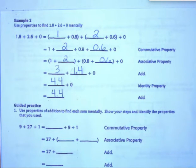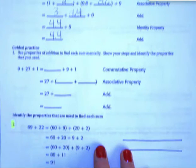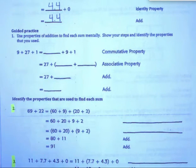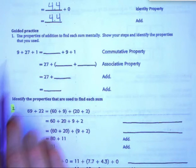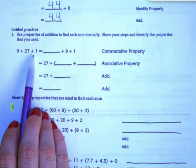Alright, let's do a guided practice problem. Use properties of addition to find each sum mentally. Show your steps and identify the properties that you used. We have 9 plus 27 plus 1.